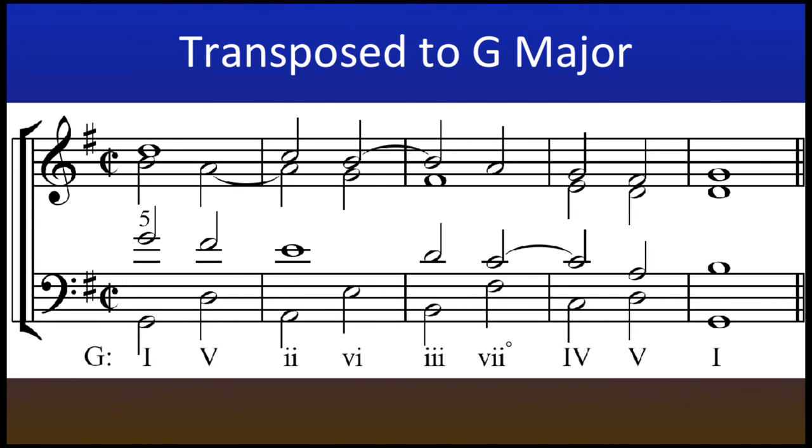With soprano beginning at the fifth, it is still possible to work out the upper voices of the sequence and respect the rules on common tones and voice ranges. How? By transposing the entire sequence to the key of G major.